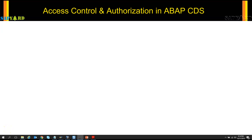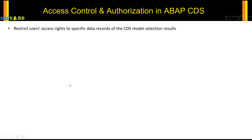What are CDS Access Controls, or what authorizations and securities are needed for CDS views? CDS Access Controls are defined as CDS rules leveraging the Data Control Language, or DCL. CDS Access Controls restrict users' access rights to specific data records of the CDS model. So what does the Access Control do? It restricts the user's access to the data.